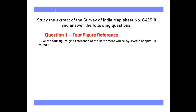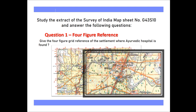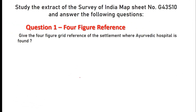The question is: give the four-figure grid reference of the settlement where an Ayurvedic hospital is found. So from the extract, students, you have to find out the settlement where we are seeing the Ayurvedic hospital. I have found the settlement — that is Sirori. Just beside Sirori, we can see the Ayurvedic hospital. Now, how to find out the four-figure grid reference? Students who follow us know how to find it, but I am repeating it again.